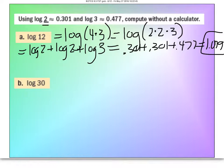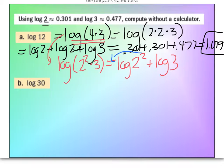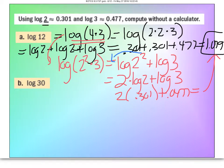This is not the only way to do this problem. Alternatively, write log of 2 squared times 3. Pulling apart: log of 2 squared plus log of 3. The exponent comes forward: 2 times log of 2 plus log of 3. Substituting: 2 times 0.301 plus 0.477 gives the same answer. Notice that adding 0.301 and 0.301 is the same as multiplying 0.301 times 2 — either method is fine.